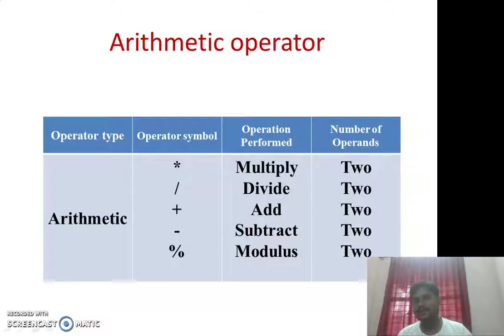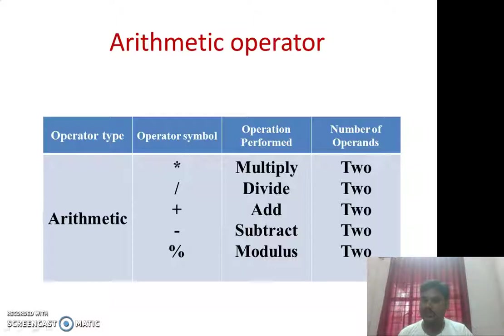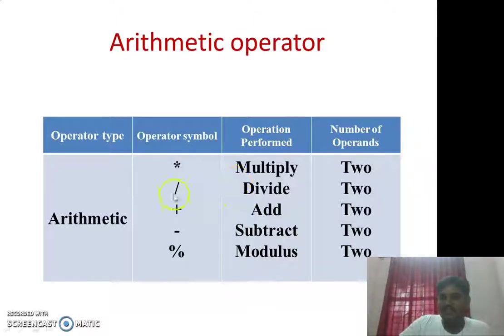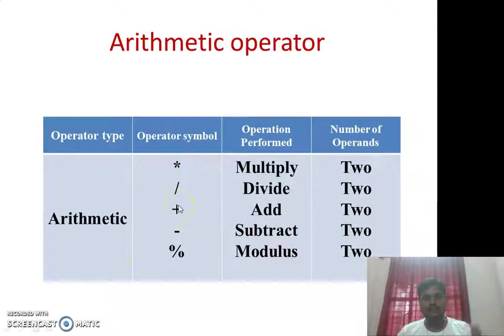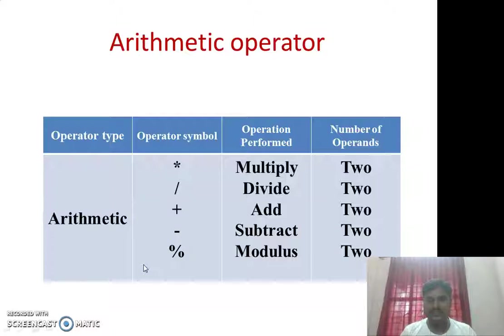To declare those registers with vector declaration, documents have been shared — you need to go through them to learn how to declare vectors and access particular bits in an array. In the same way: for divide use slash (/), for addition use plus (+), for subtract use minus (-), and for modulus use percentage (%). These are the basic arithmetic operators.